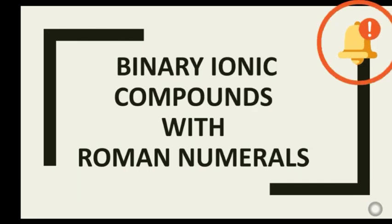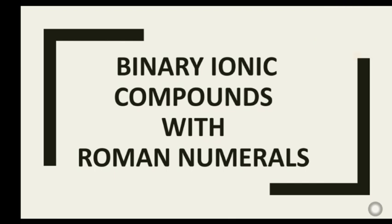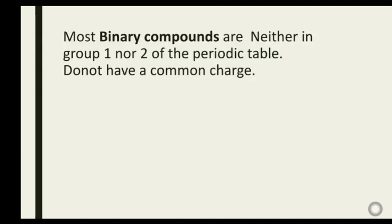Welcome back. In this video we'll be studying the naming and writing of chemical formulas of binary ionic compounds with Roman numerals. In the periodic table, most binary compounds that are neither in Group 1 or 2 do not have a common charge — they have variable charges. Most of them are transition metals.